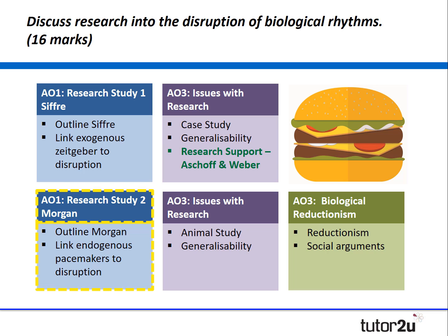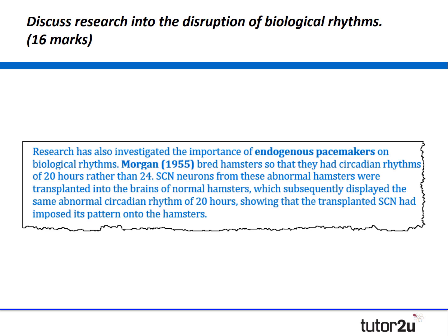Let's now take the same approach using Morgan's study and write a brief outline. We might say that researchers also investigated the importance of endogenous pacemakers — the internal factors — on biological rhythms. Morgan bred hamsters so that they had a circadian rhythm of 20 hours rather than 24. SCN neurons from these abnormal hamsters were transplanted into the brains of normal hamsters, which subsequently displayed the same abnormal circadian rhythm of 20 hours, showing that the transplanted SCN had imposed this biological pattern onto the hamsters. So by taking a biologically abnormal component from these deliberately bred hamsters, that affected the normal hamsters too.